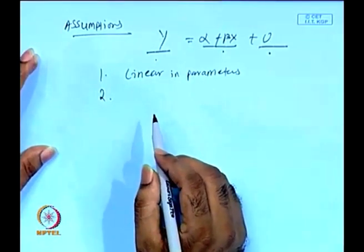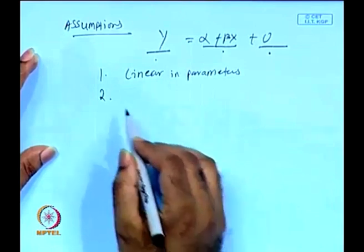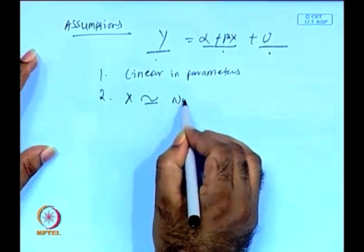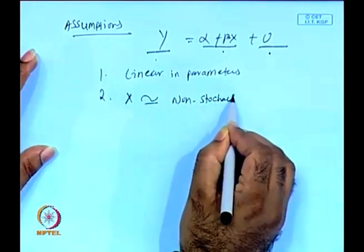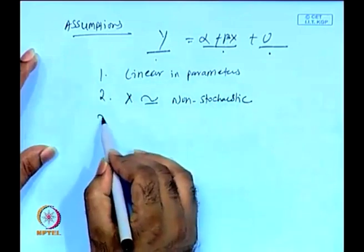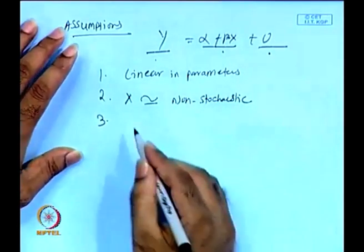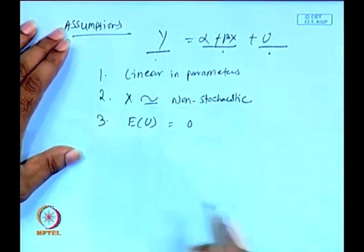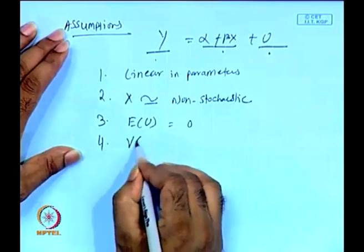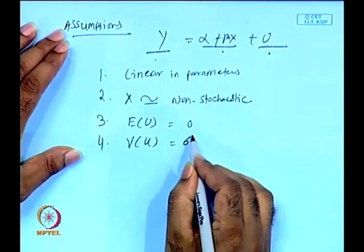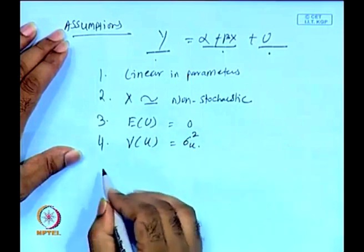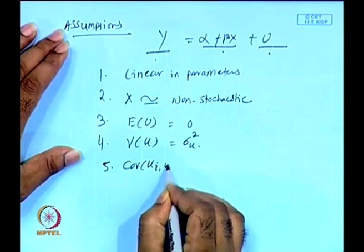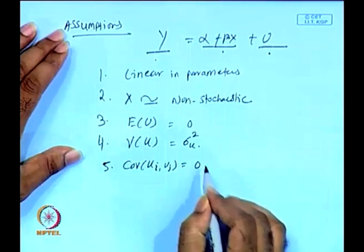The second assumption is that x, the independent variable, should be non-stochastic. The third assumption related to the error component is that the mean of the error term should be equal to 0. The fourth assumption is that the variance of the error term should equal σ²u. The fifth assumption is that the covariance of uᵢ and uⱼ should be equal to 0.